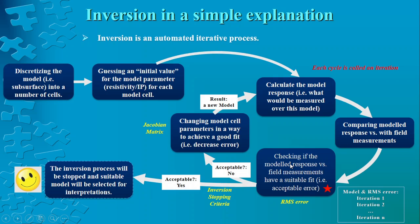The model response is then calculated based on the mathematical relationships, and thereafter we compare the model response with the field measurements. This comparison gives us an idea about the quality of the data fit and produces an error. We check this error, and if it is acceptable the inversion is stopped; otherwise, the inversion continues. In most cases the inversion is not stopped at the first iteration — the result is not yet acceptable. So we change the model parameters to achieve a better fit and decrease the error using the Jacobian matrix.